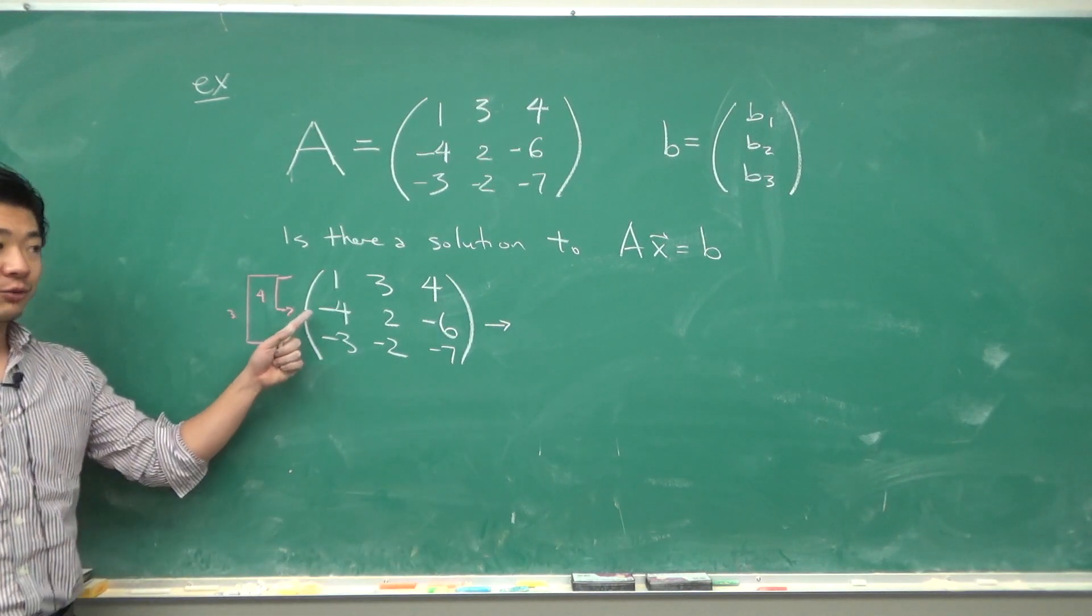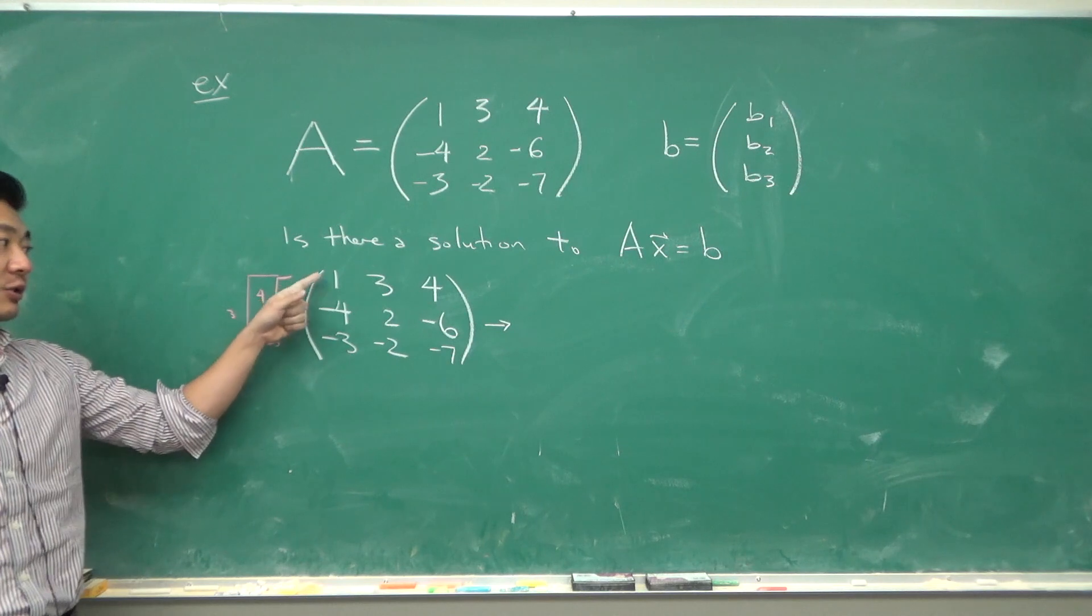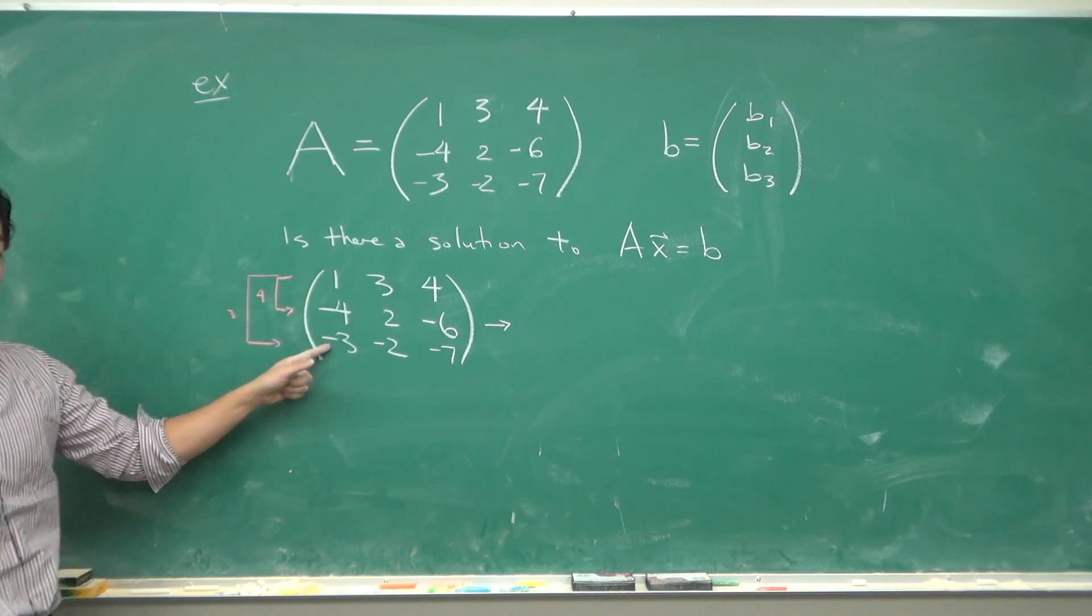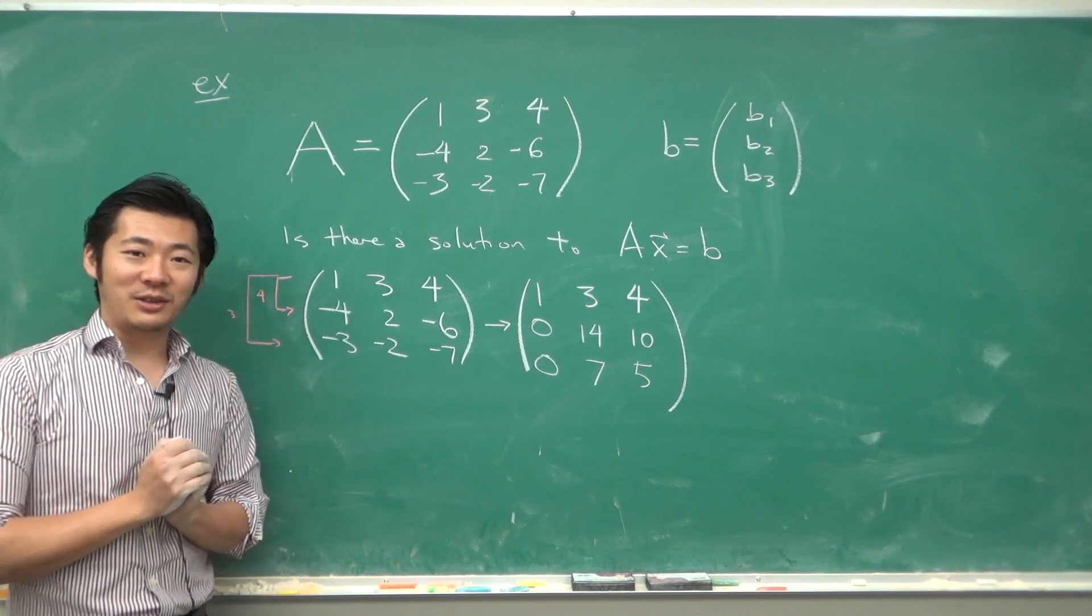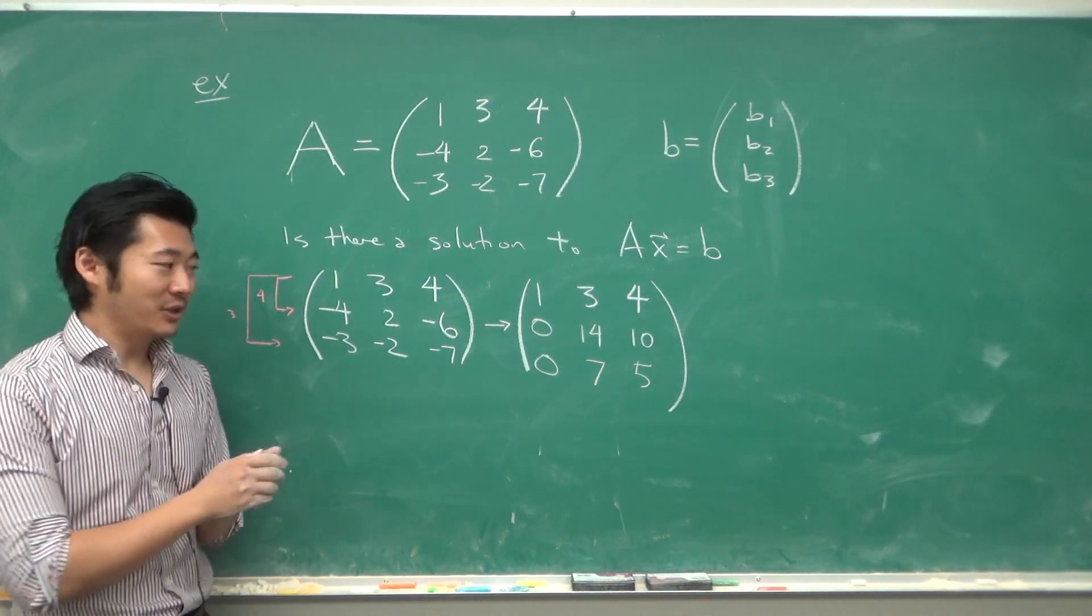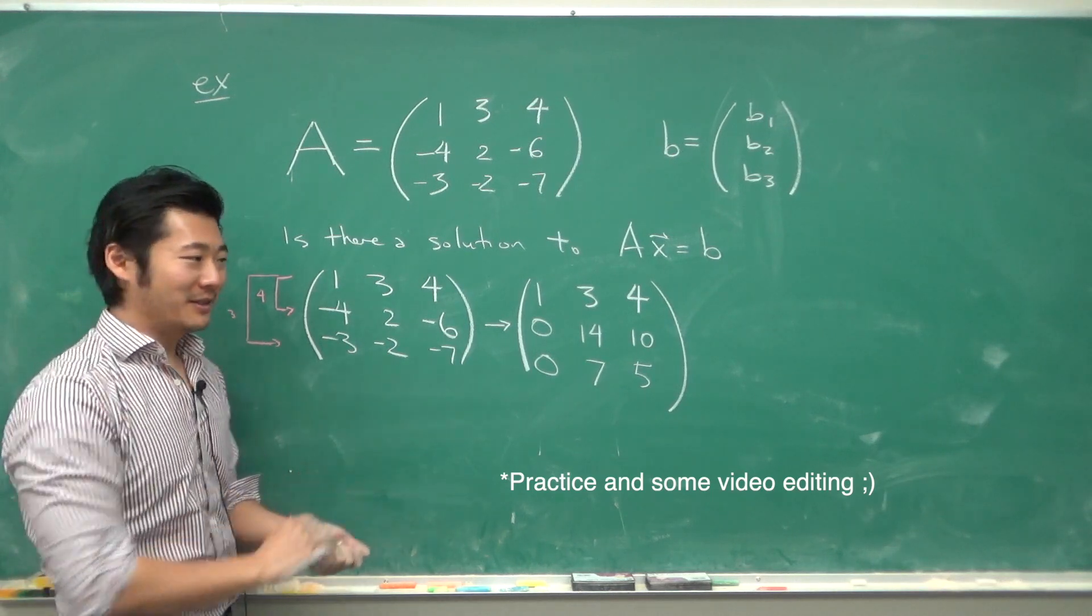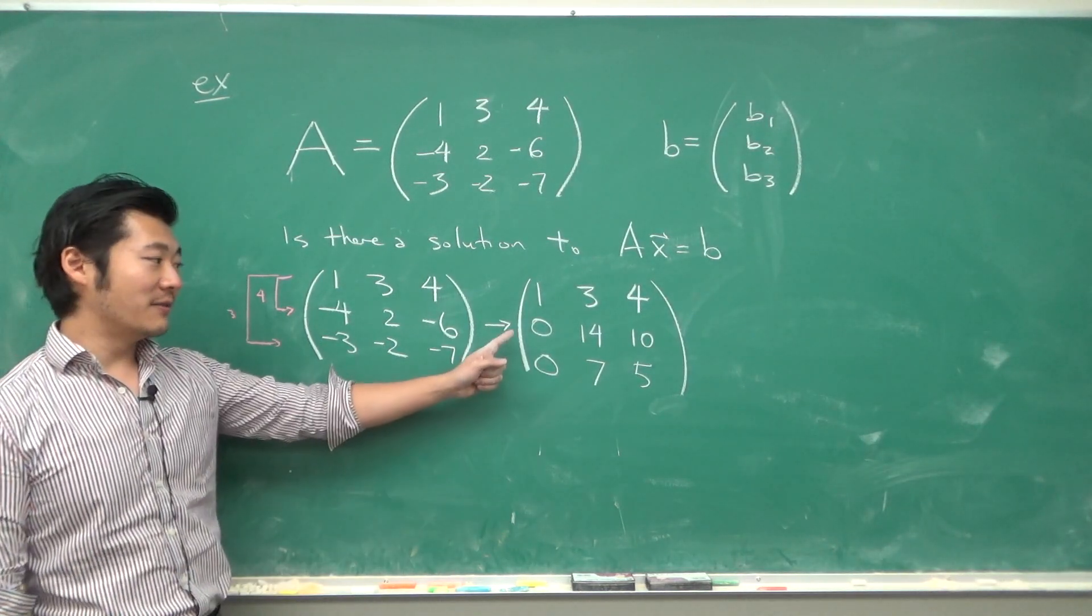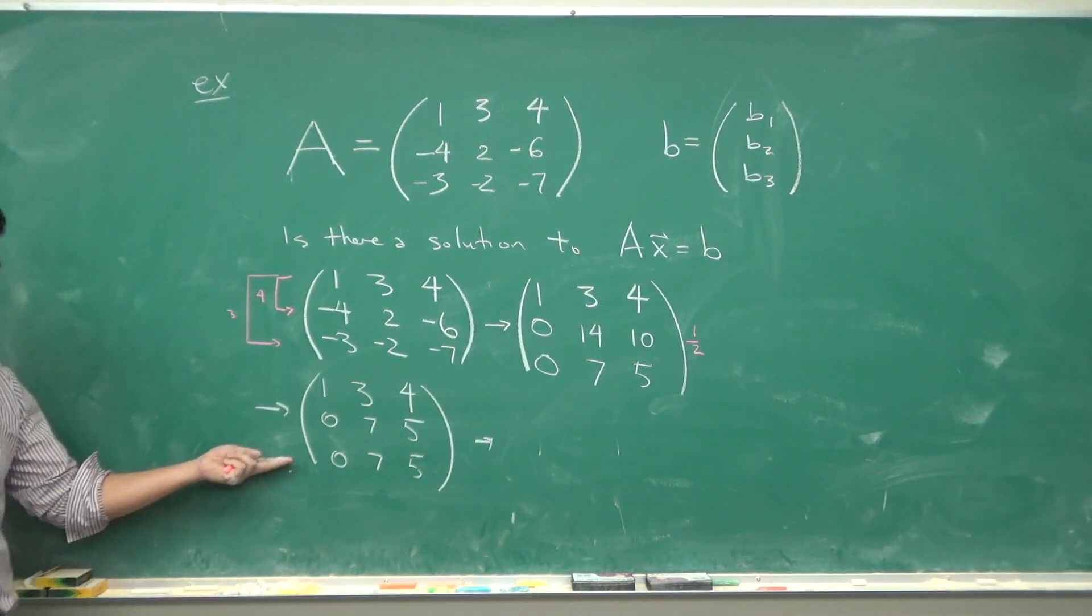We can multiply the first row by four and add it into the second row, and multiply the first row by three and add it into the third row. And this will give us this matrix. With enough practice, you will also be able to magically just compute the rows in an instant like me. In the next step, let's divide everything by two in the second row, and we will get something like this.